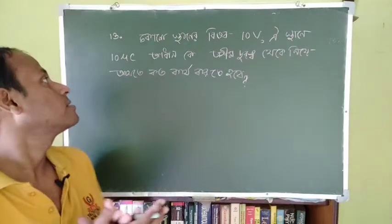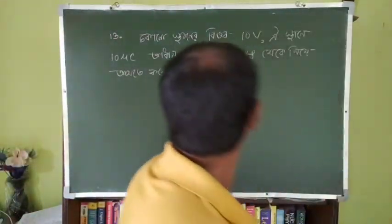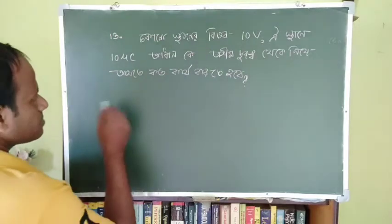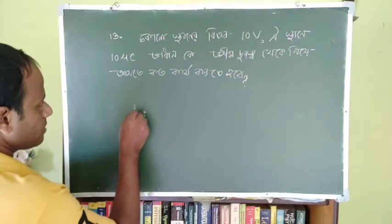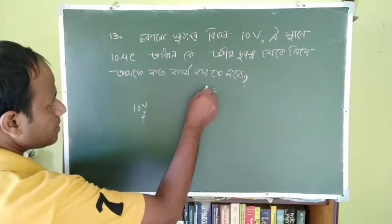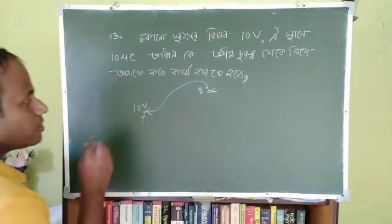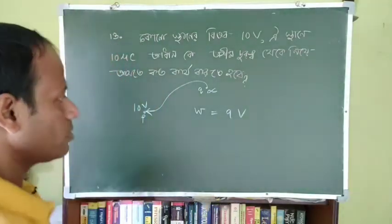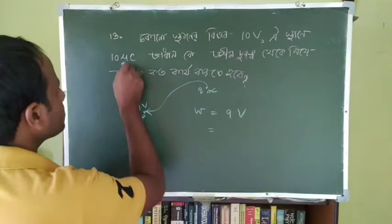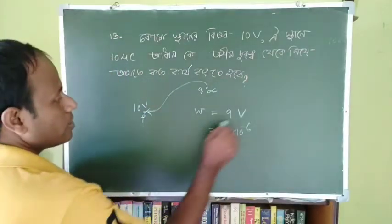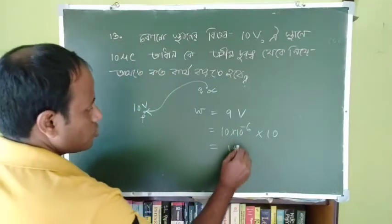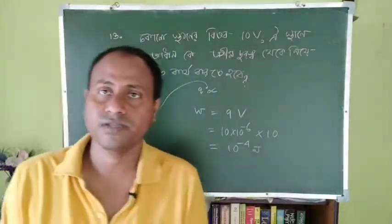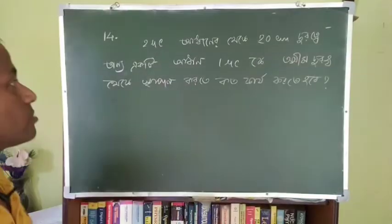The next question: a charge of 10 microcoulombs is brought from infinity to a point where the potential is 10 volts. How much work is done? Using W = QV: W = 10×10⁻⁶ coulombs × 10 volts = 10⁻⁴ joules. So the work done is 10⁻⁴ joules.